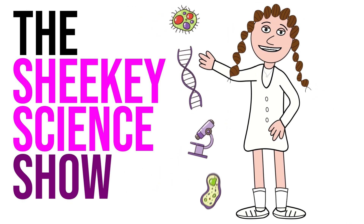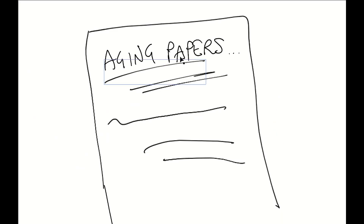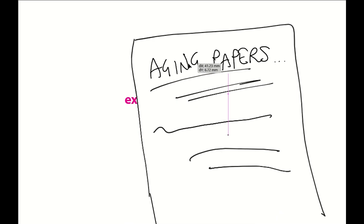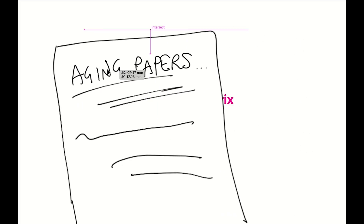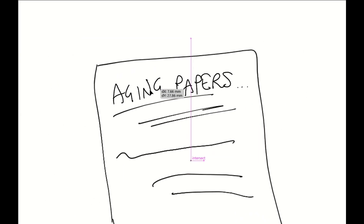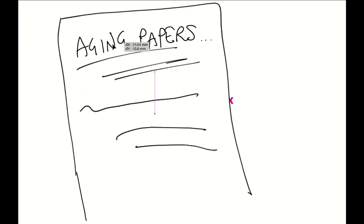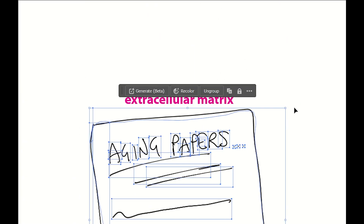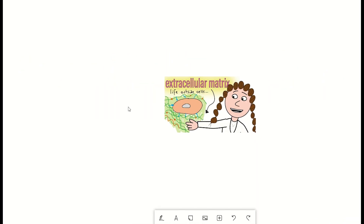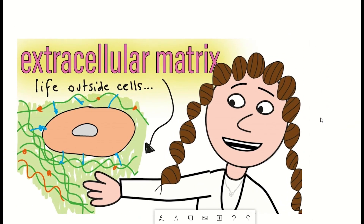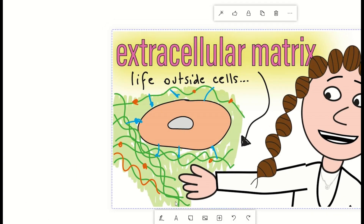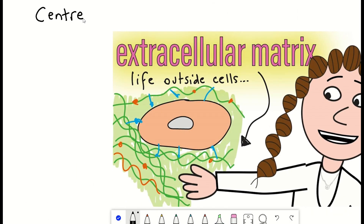Today we are going to talk about the components that appear in many ageing papers, yet always appear to be lurking in the background, with it being acknowledged but largely ignored. That is the extracellular matrix. The extracellular matrix, being the substance outside of cells, is also somewhat lurking in the background, but today I will put it at centre stage and describe the cool and complex ways in which it contributes to our biology and how the extracellular matrix changes with age.